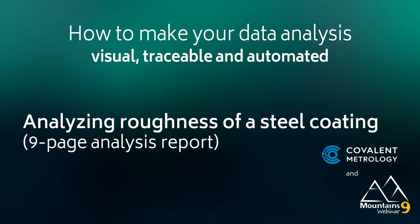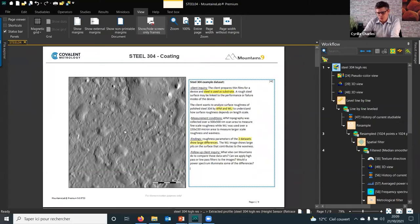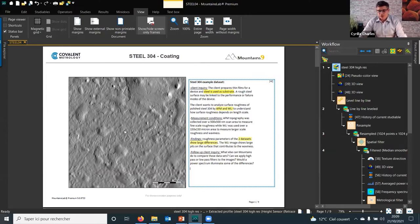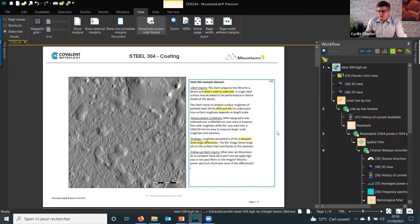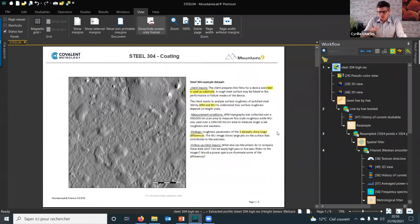This surface is a coating of steel and we wanted to know the features of the surface. Roughness is one of the features, so we wanted to calculate and quantify it. We also wanted to work at different scales, so we used an AFM and also a white light interferometer to measure the surface.